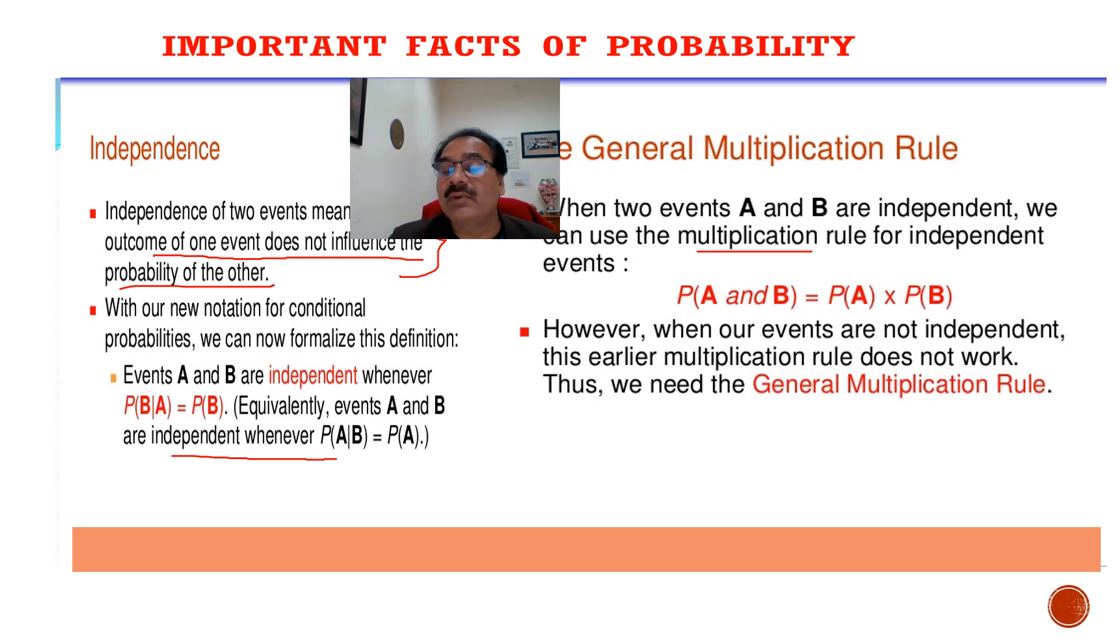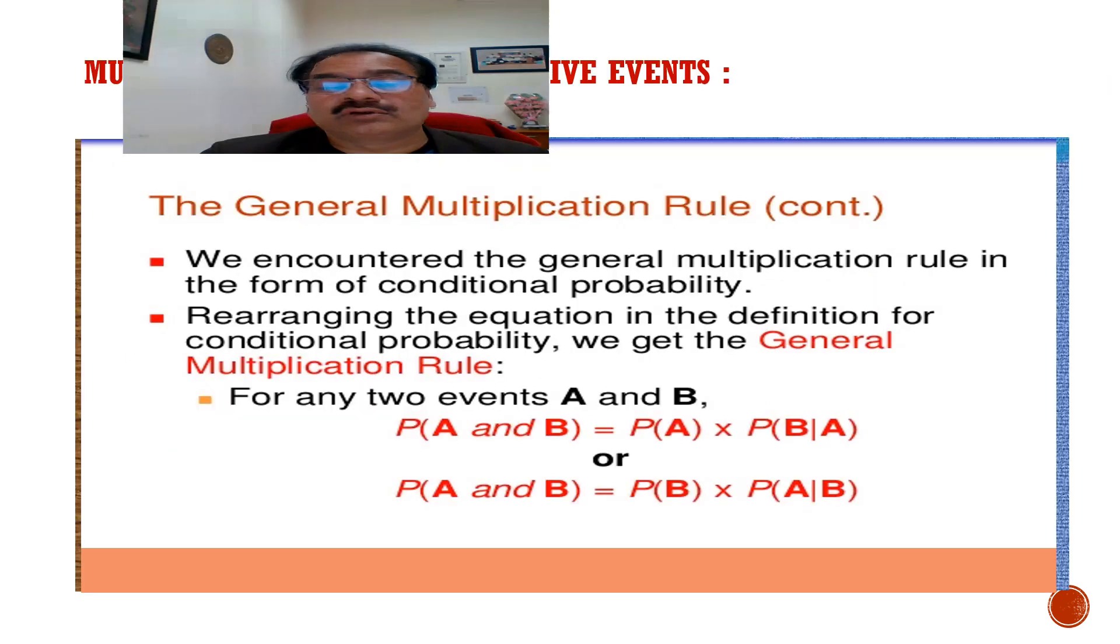When two events A and B are independent, we can use the multiplication rule for independent events, and that is very famous: P of A and B is equal to P of A cross P of B. However, when our events are not independent, this earlier multiplication rule does not work. Therefore, we need the general multiplication rule, and that is P of A and B is equal to P of A cross P of B given A, and P of A and B is equal to P of B multiplied by P of A given B.